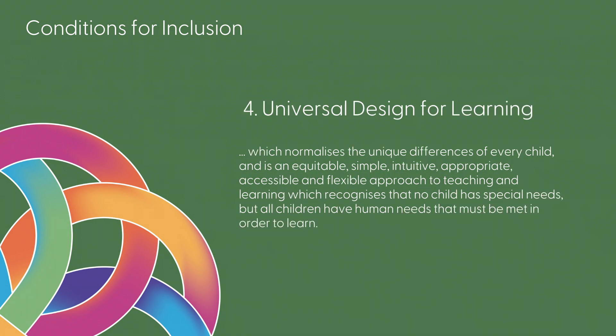And four: universal design for learning, which normalises the unique differences of every child, and is an equitable, simple, intuitive, appropriate, accessible, and flexible approach to teaching and learning, which recognises that no child has special needs, but all children have human needs that must be met in order for them to learn.